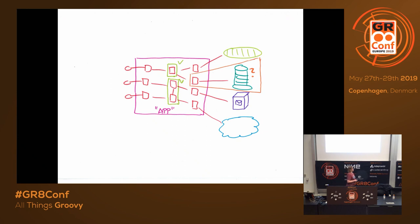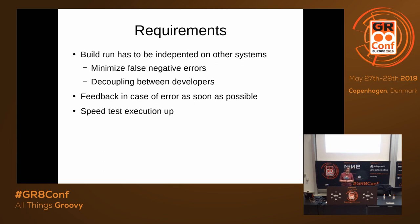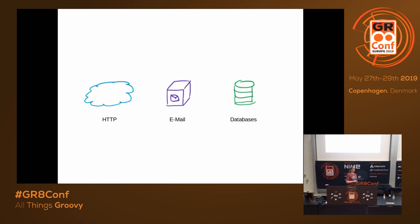We are good at writing integration tests between classes, and unit testing — but we have problems writing tests for classes that interact with infrastructure. Before showing solutions, let me clarify the requirements. I want a build that runs independent from other systems to minimize false negative errors. When an error occurs, I want to be sure it comes from my implementation, not other systems. I want to be decoupled from other developers and get fast feedback — ideally on my local machine — and I want to speed up test execution.